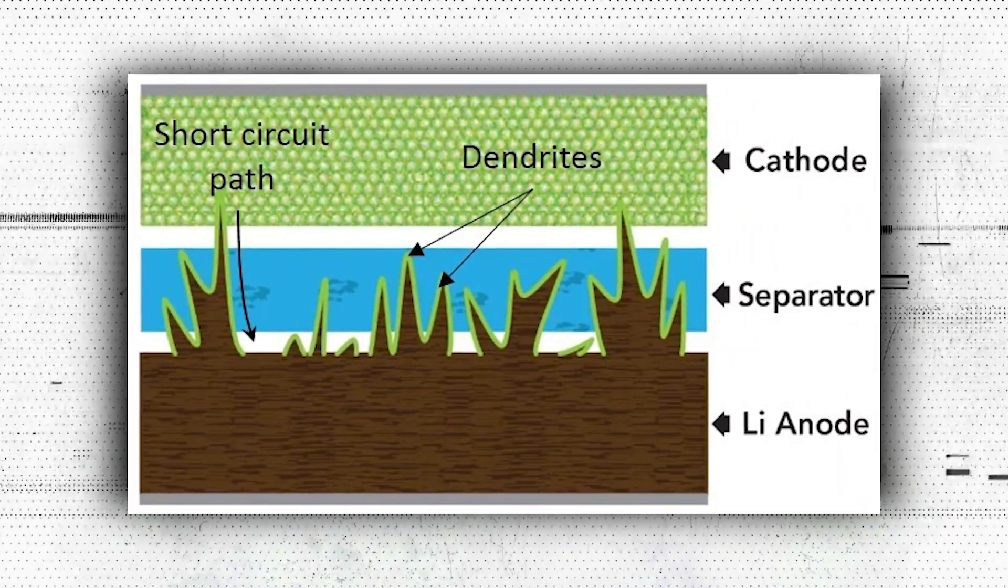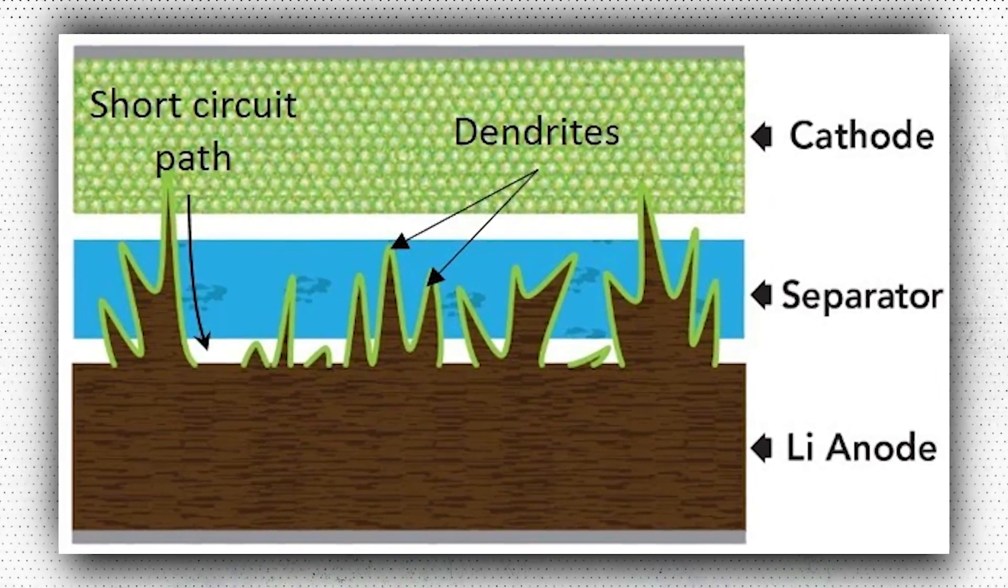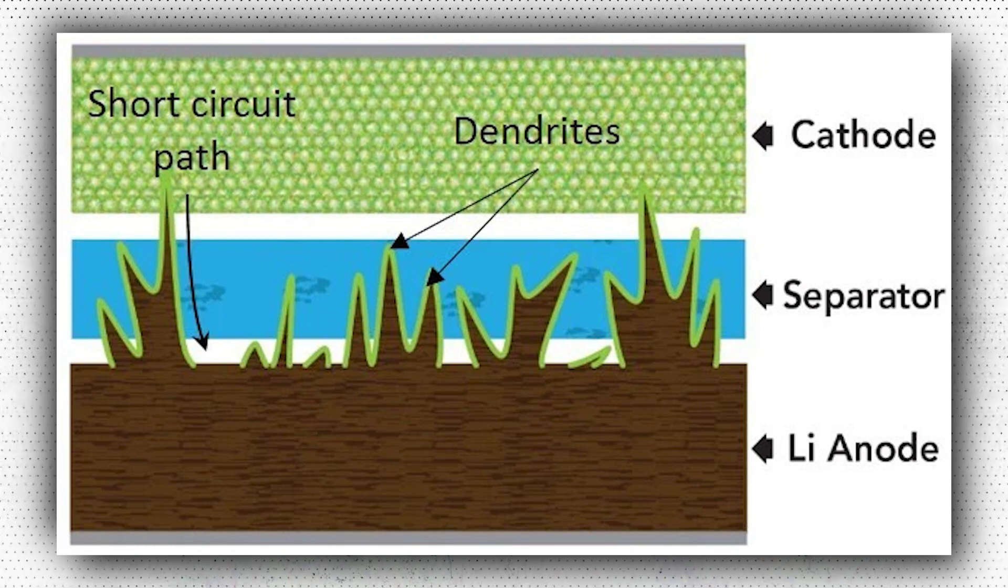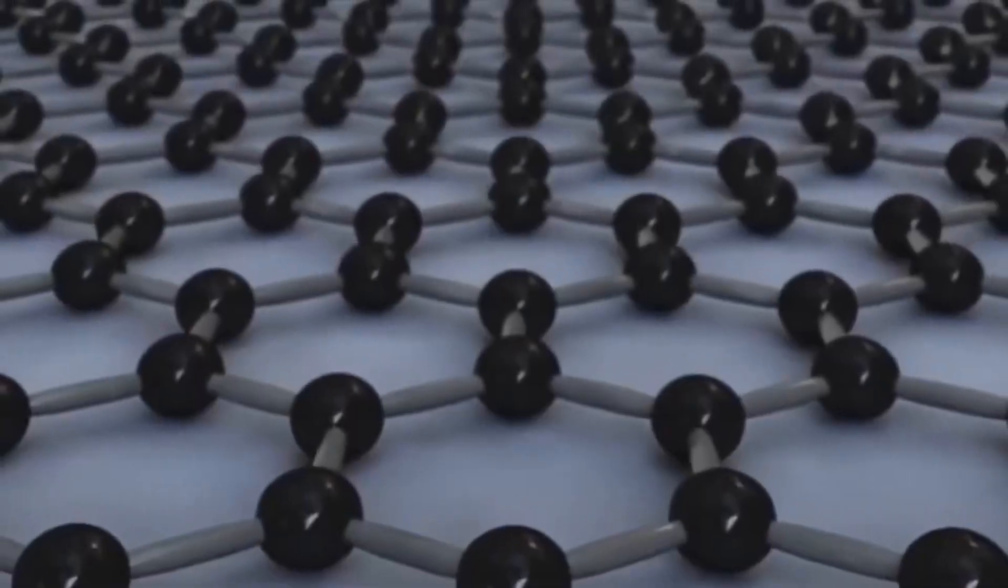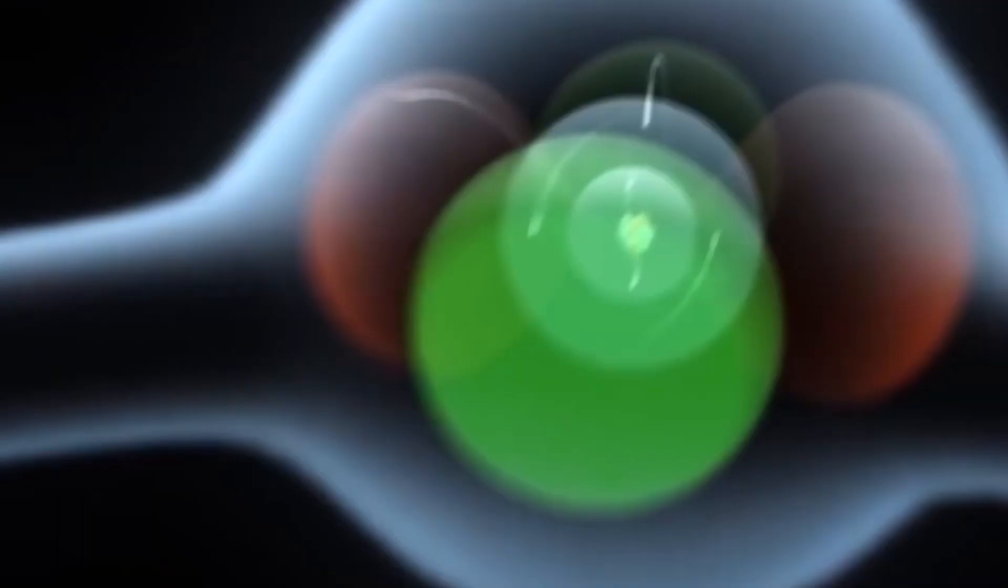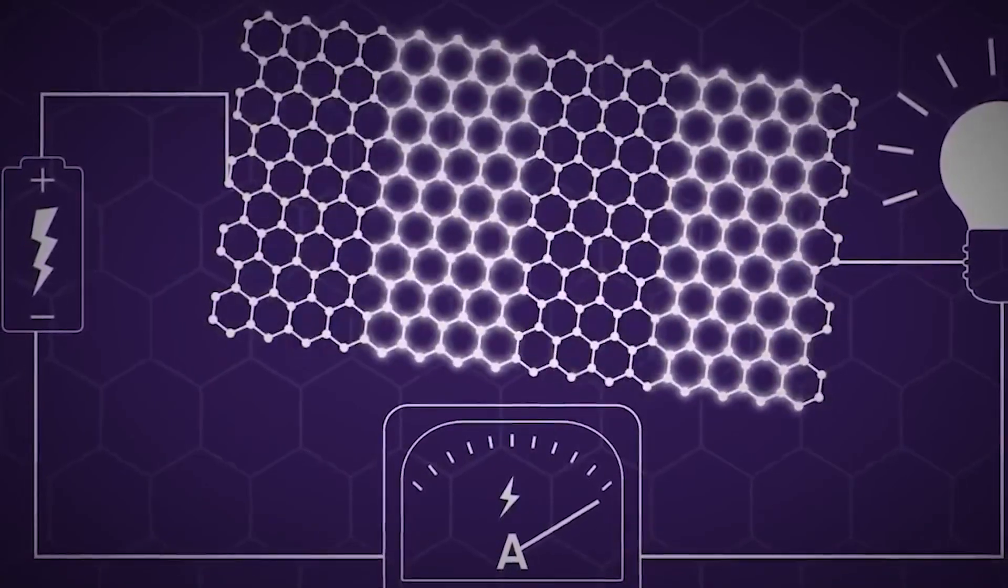Dendrites are microscopic hard lithium metal tree-like structures that can develop within a battery. A solid-state battery may eventually be unable to cope with these spurs, which can have disastrous effects on the battery's ability to generate electricity and hold a charge.